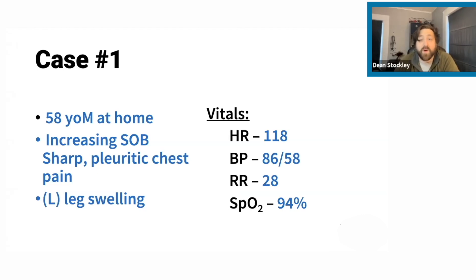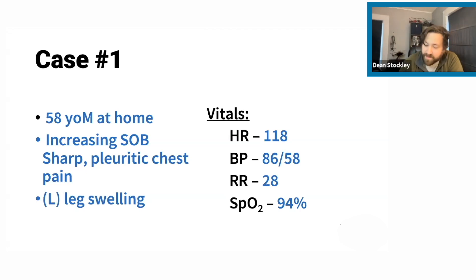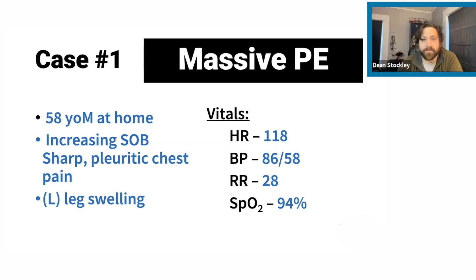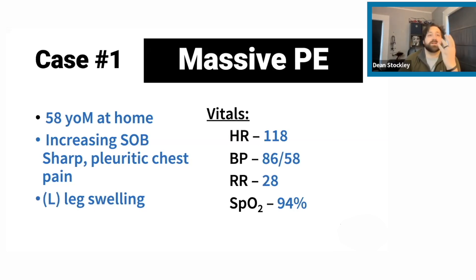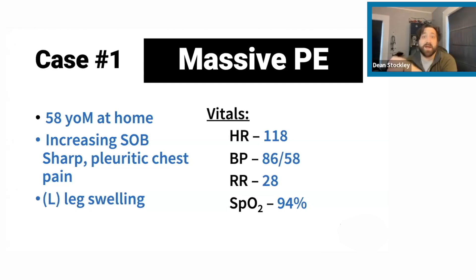We know he's in a form of obstructive shock. The subcategory we're dealing with here is PE — specifically, he's having a massive PE. So we have the three categories: low-risk PE, sub-massive PE, and massive PE.